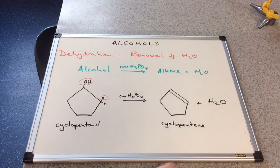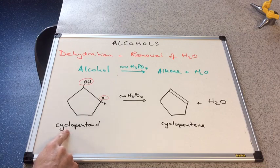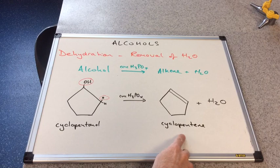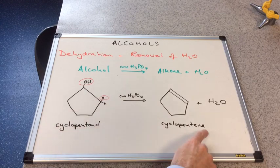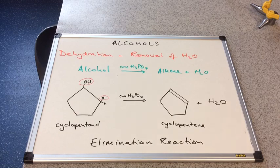You can see the products: the alkene produced is a cyclic compound. The alcohol we dehydrated is cyclopentenol — cyclic, five carbons. The alkene produced is also a cyclic alkene: five carbons with one double bond, so it's cyclopentene, plus water. This is an example of an elimination reaction due to the removal of a small molecule — in this case, water.